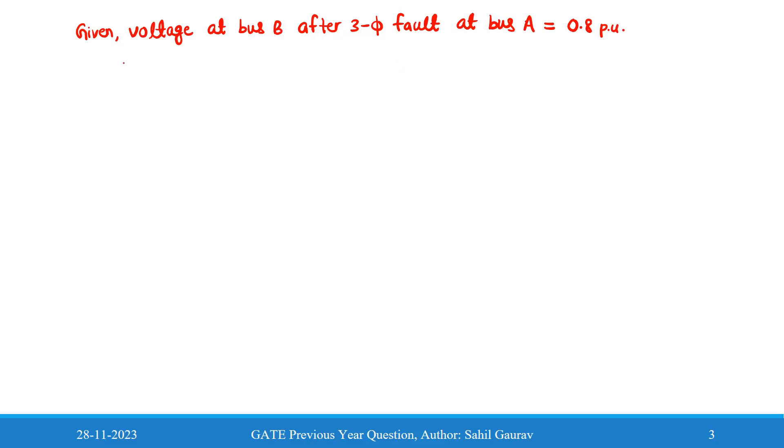So we can write the expression for the post-fault voltage at bus B after three-phase fault at bus A. We can write V_B(post-fault) equal to the pre-fault voltage at bus B minus the impedance that is connected between A and B bus and the fault current at A.